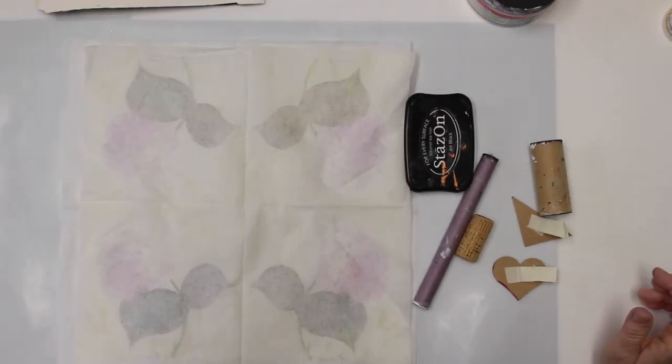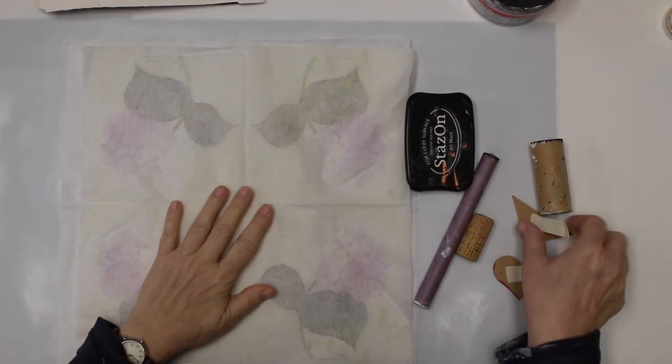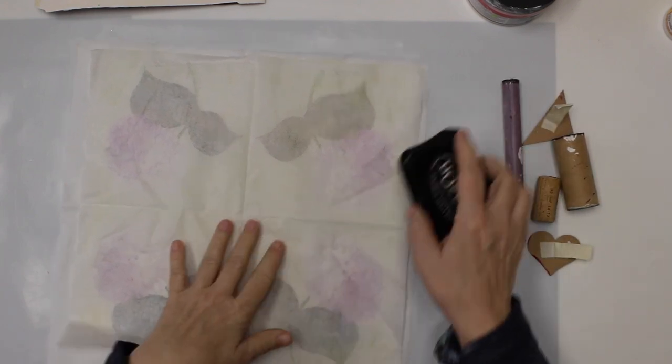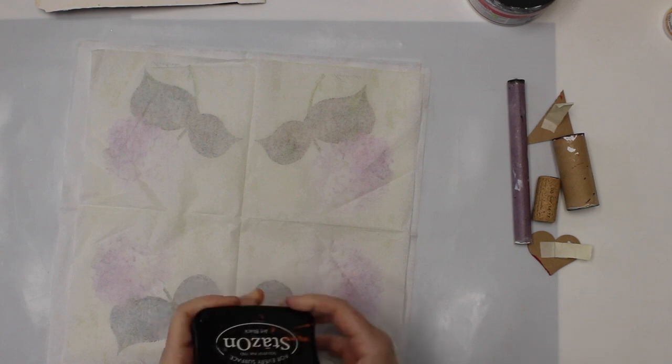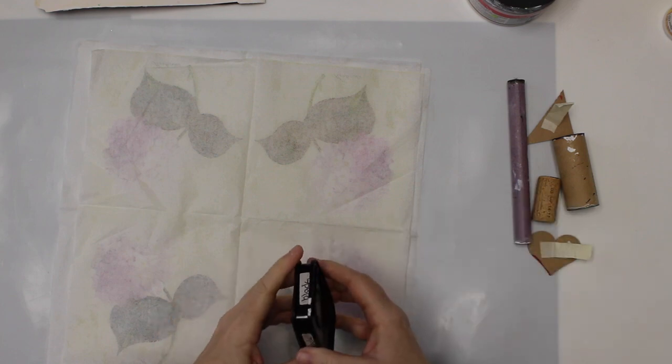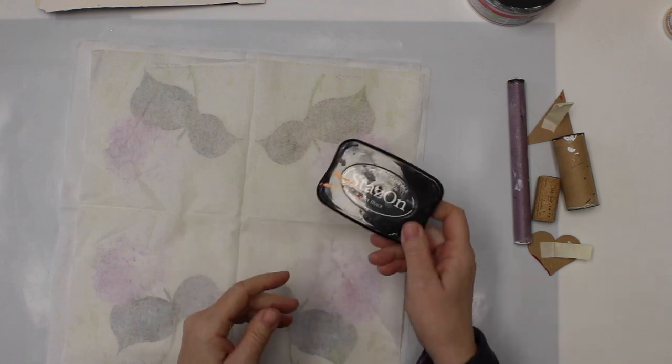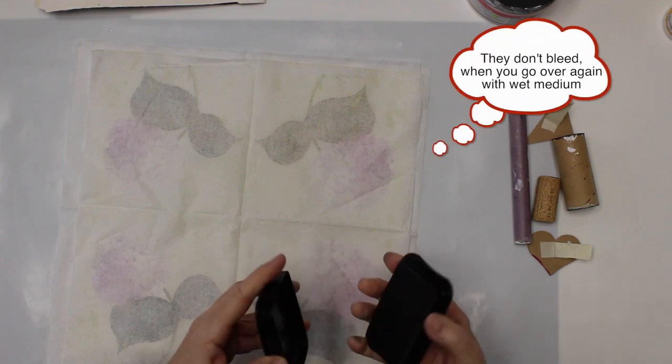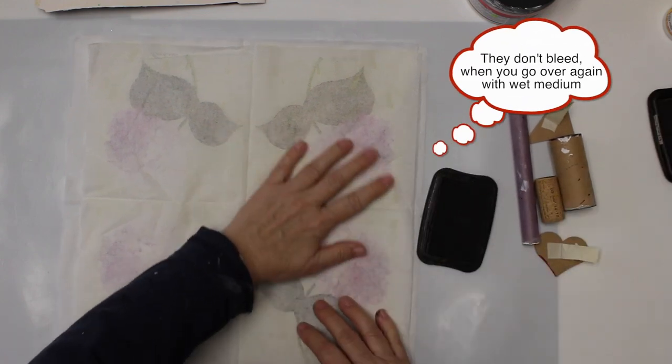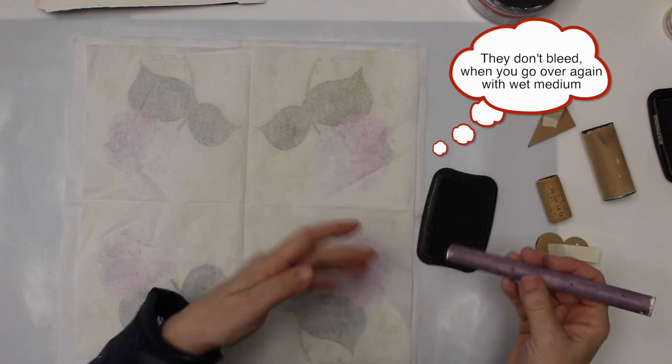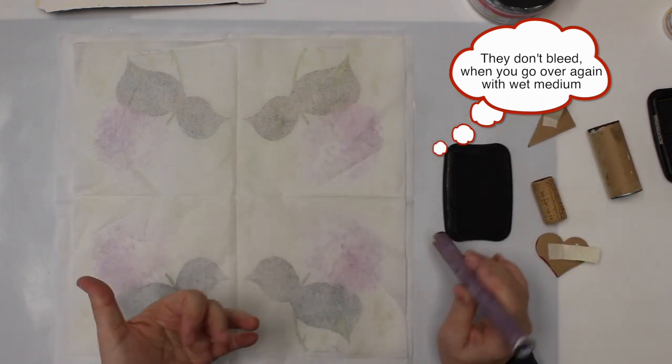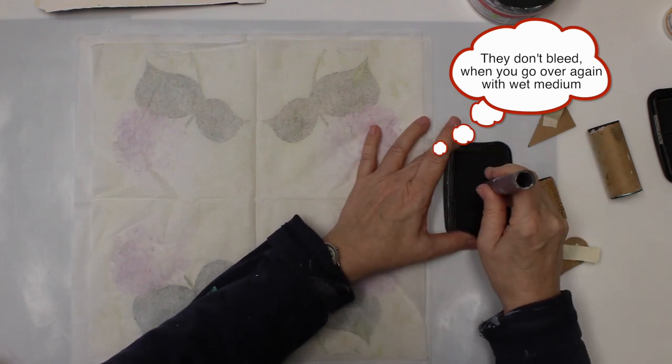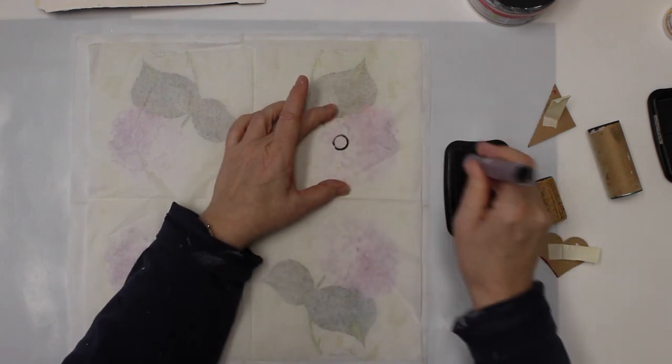Obviously not all the napkins are the same size. This time we're going to use it with the StazOn black ink. If you want to have only one ink, I would use a StazOn ink or an archival ink which doesn't bleed. That's the one ink I would use. We're gonna start stamping.